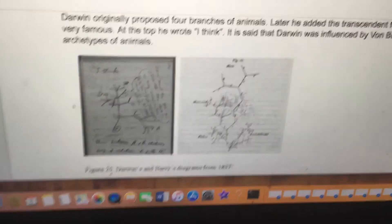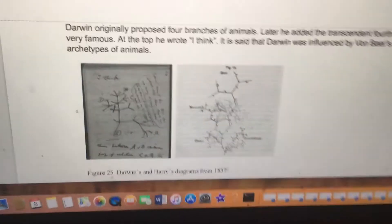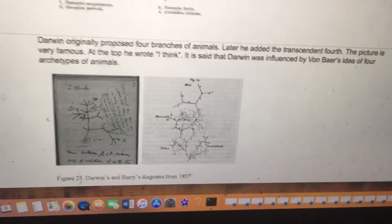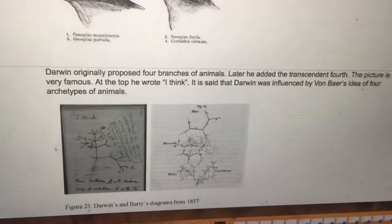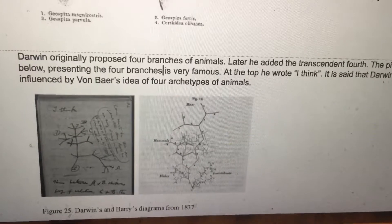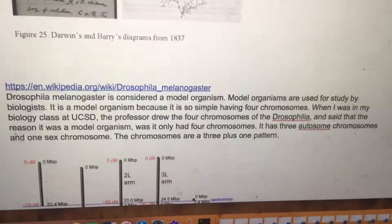Here's the picture — originally there were three groups, but then he added a fourth. Darwin originally proposed four branches of animals. Later he added the transcendent fourth. The picture presenting the four branches is very famous; at the top he wrote 'I think.' It is said that Darwin was influenced by Von Baer's idea of four archetypes of animals.